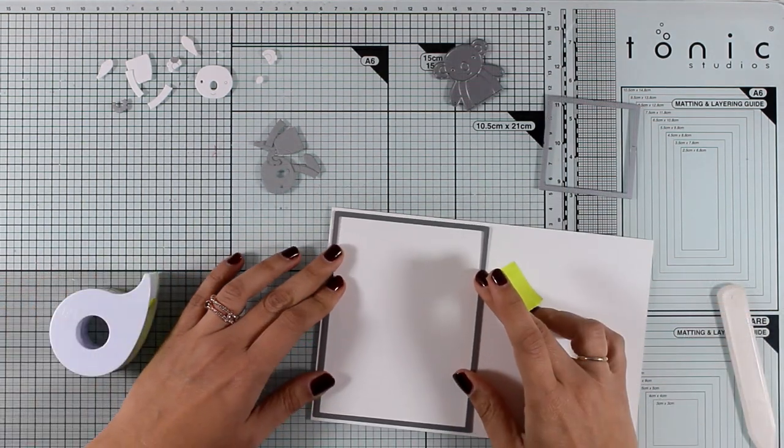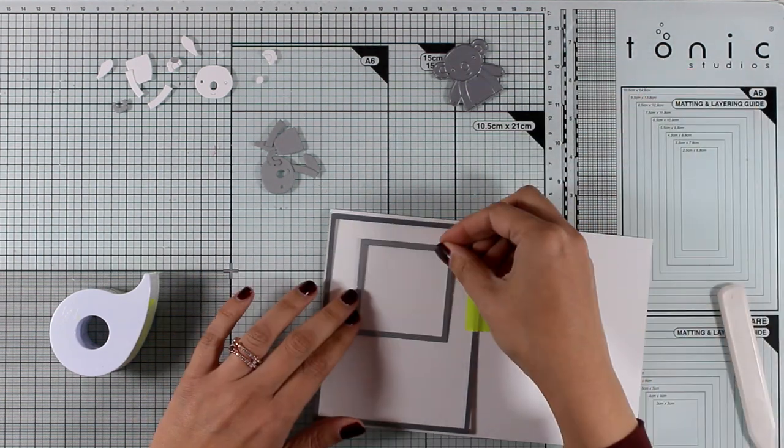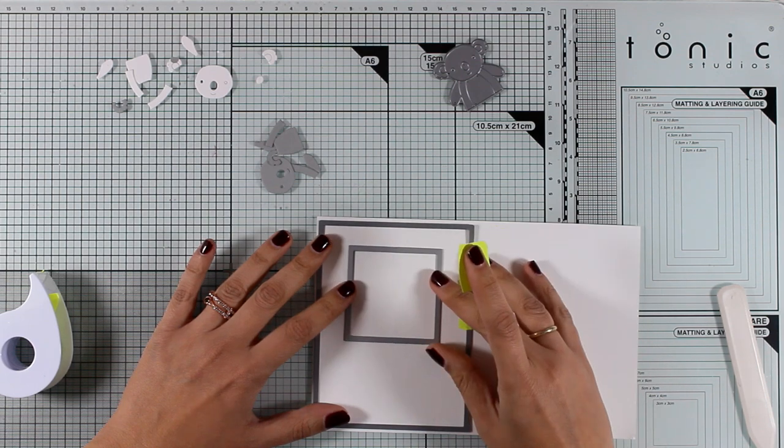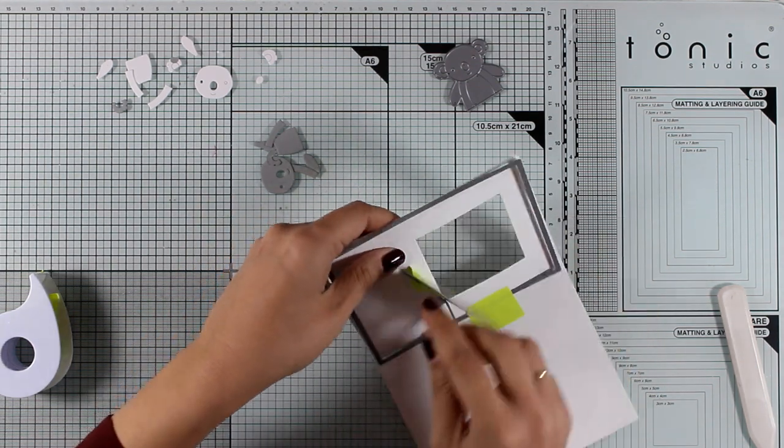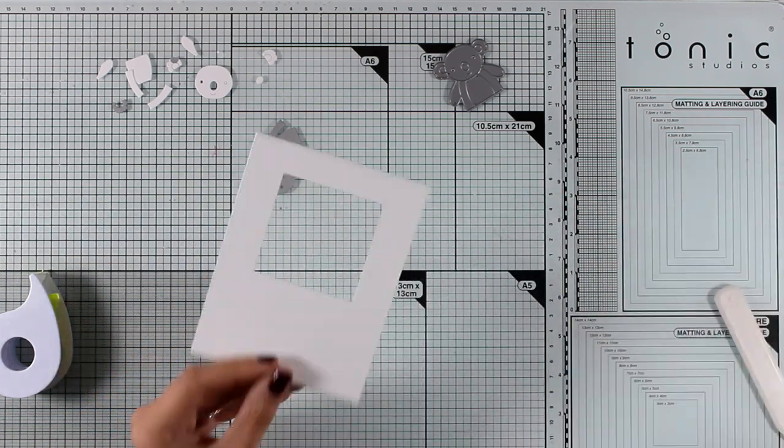First, I'm going to create my panel. This is going to go on top of my card base, so I'm using those dies to create a little window. I'm placing them one inside the other, I'm going to secure them with some post-it tape and then run them through my die-cutting machine. And I have my panel ready to go.